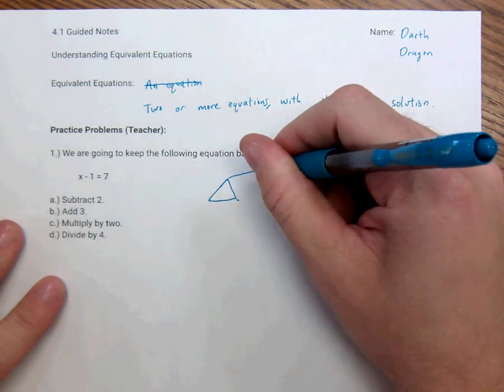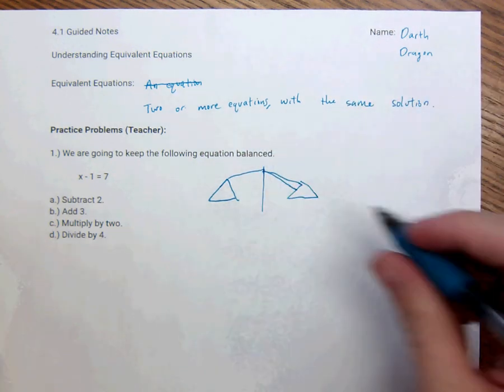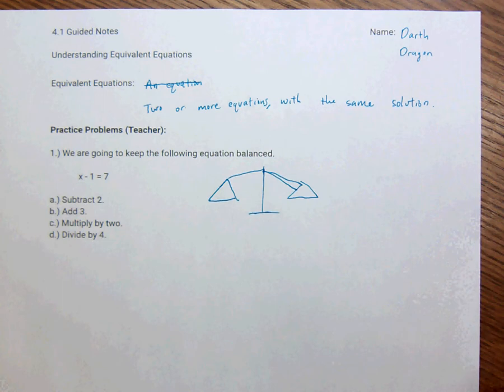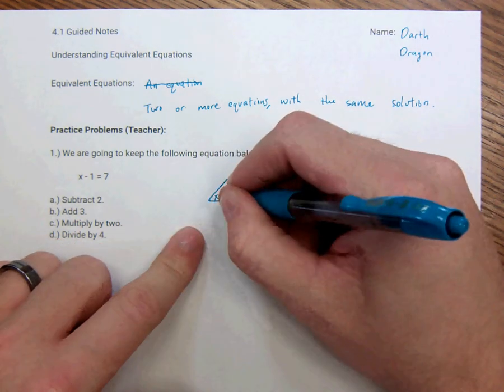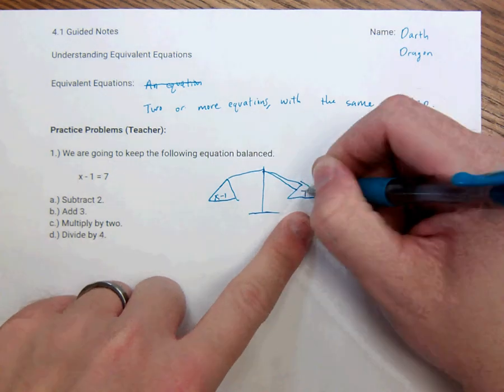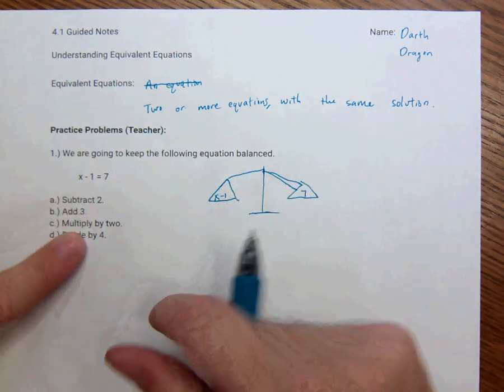Have you seen this? That doesn't look right. So we have a scale, that's a terrible scale, but it's a scale, and on this side it has to balance out with this side. And so right now, this is x minus 1, and over here is 7, and they equal each other. So what we're going to do is we're going to do things to both sides and keep them equal.